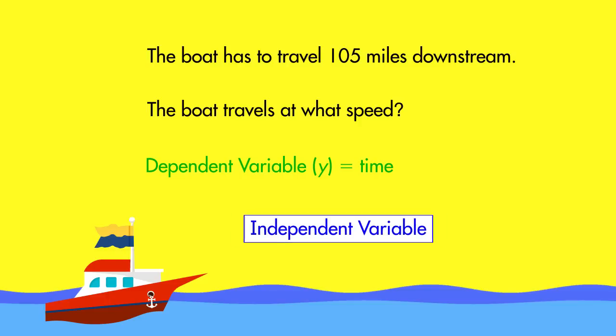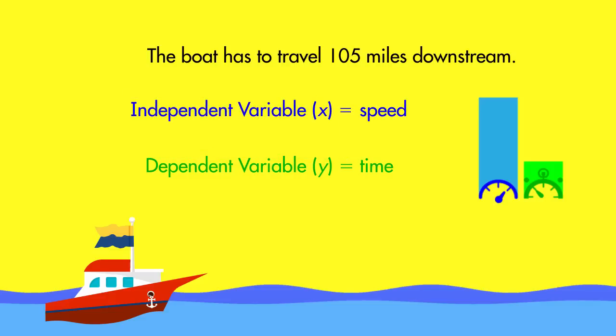To find the independent variable, look for the value that affects the dependent variable. For the time it takes to travel, speed is our independent variable. The letter X represents this variable.